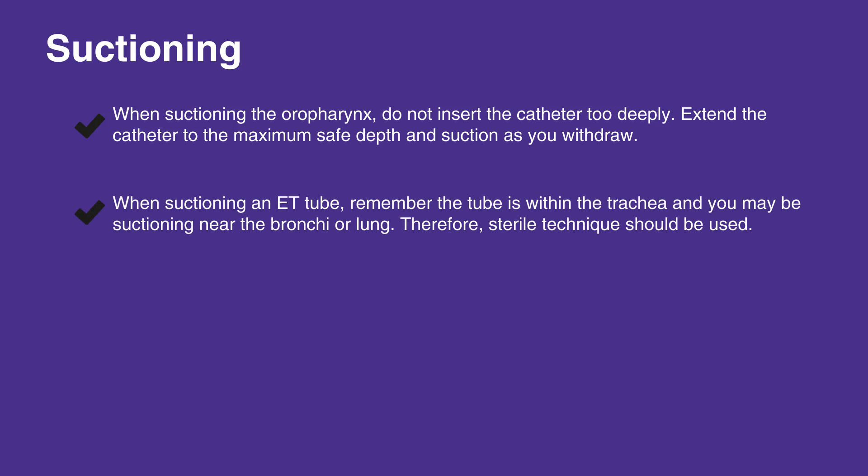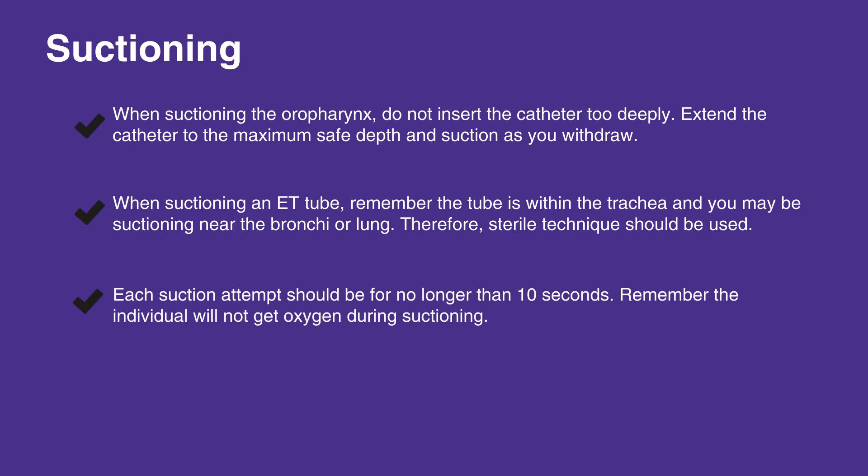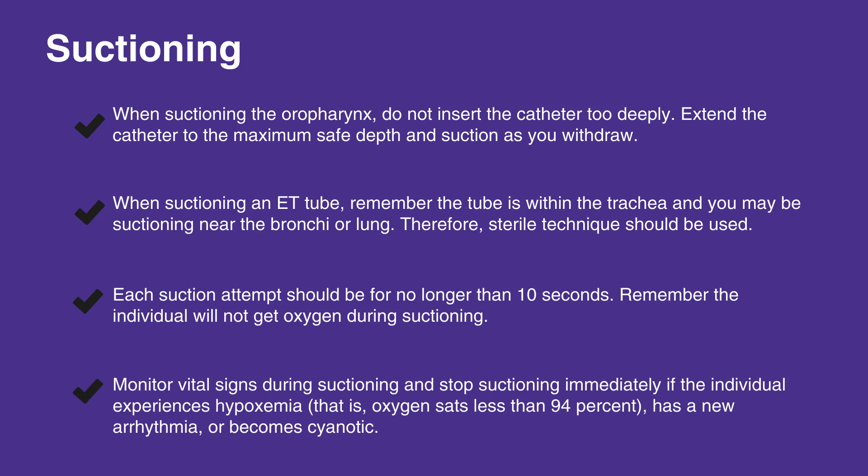When suctioning an ET tube, remember the tube is within the trachea and you may be suctioning near the bronchi or lung. Therefore, sterile technique should be used. Each suction attempt should be for no longer than 10 seconds. Remember the individual will not get oxygen during suctioning. Monitor vital signs during suctioning and stop immediately if the individual experiences hypoxemia — that is, oxygen sats less than 94% — has a new arrhythmia, or becomes cyanotic.